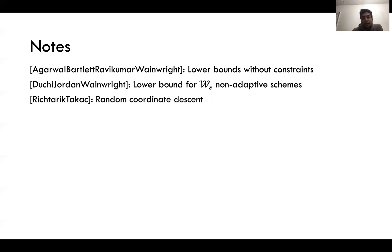Agarwal, Bartlett, Ravikumar and Wainwright prove lower bounds without information constraints. Duchi, Jordan and Wainwright proven lower bounds for local differentially private channels however to prove it only for non-adaptive schemes. Richtárik and Takáč proved these results for random coordinate descent.